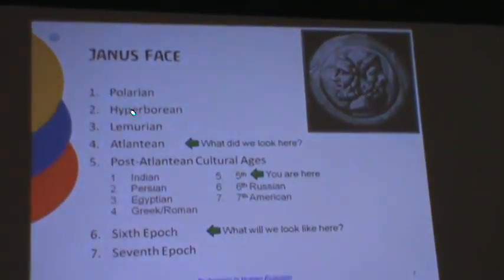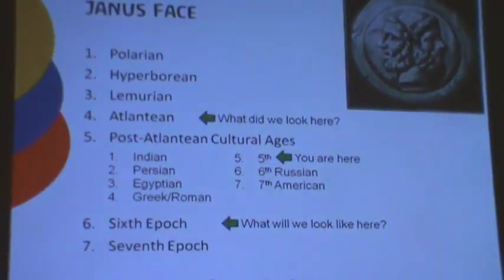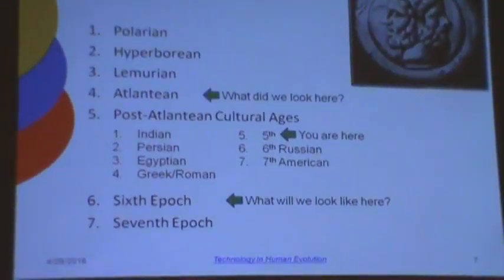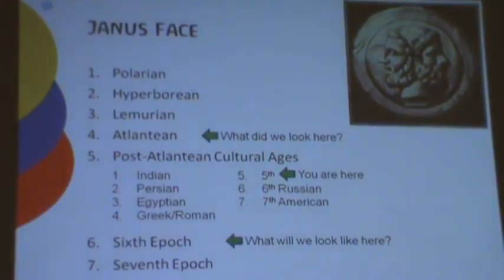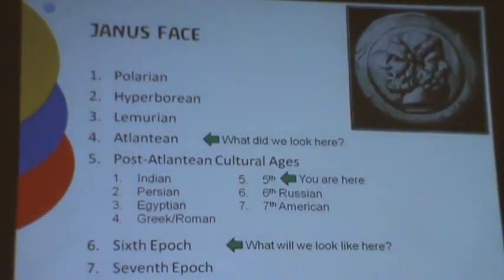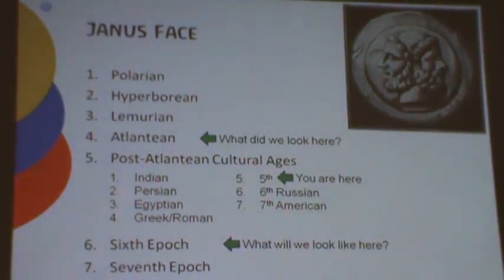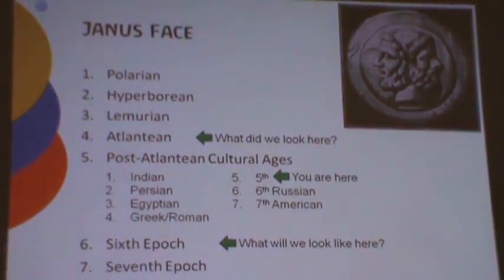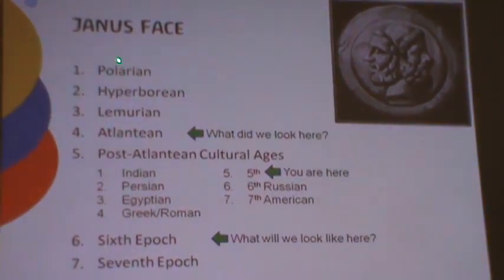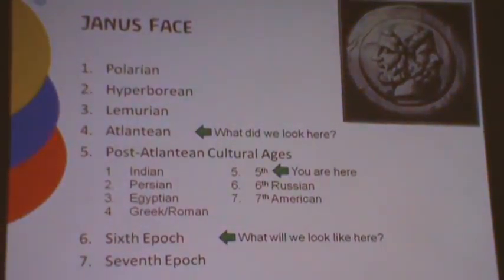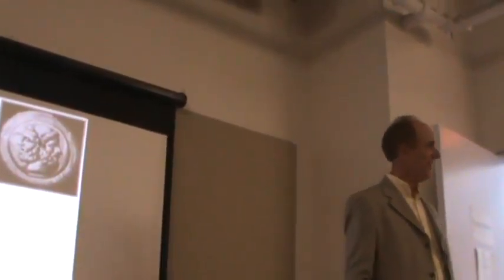We are here in the fifth post-Atlantean cultural age. We've been through four earlier epochs, this is the fifth, and we have two more to go. Each one of these lasts roughly 2,160 years — the time it takes the sun to go through one of the zodiac signs in the precession of the equinoxes. Each epoch would have had seven of those cultural ages, and seven times 2,160 times seven — that's roughly how long the earth and its physicality can last.